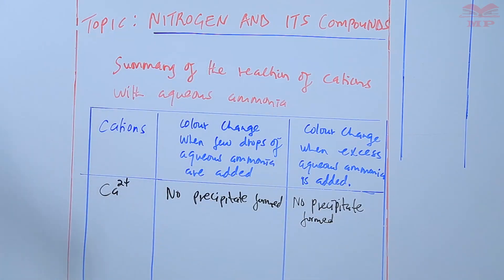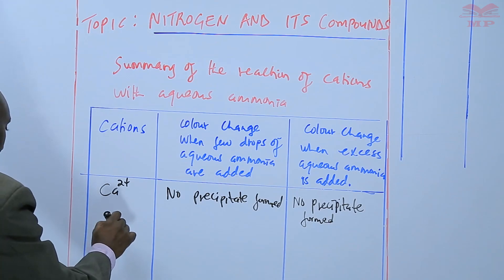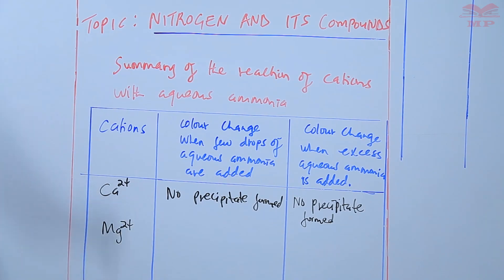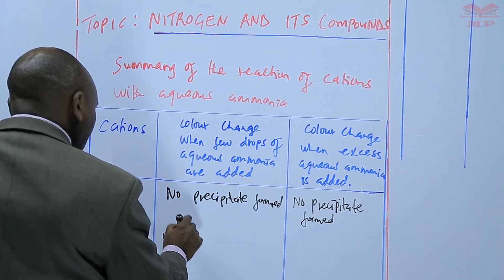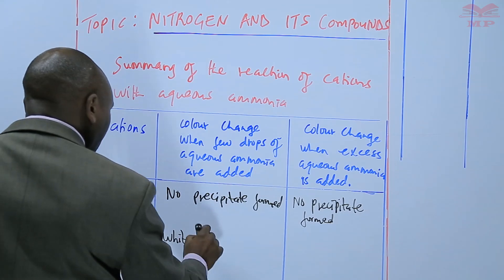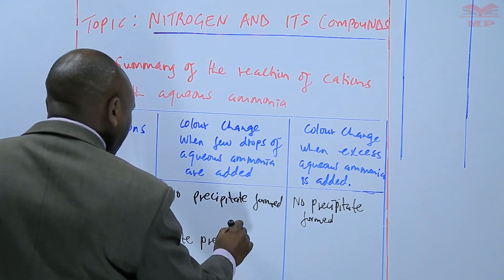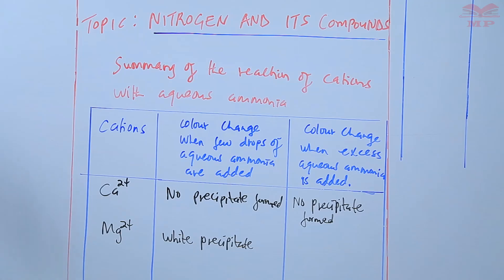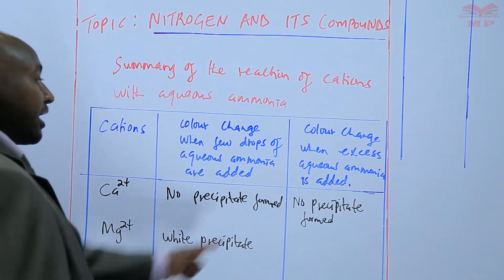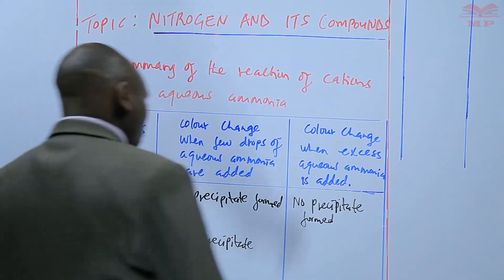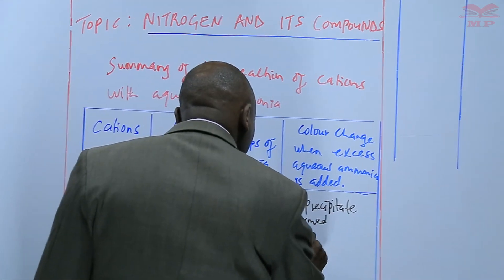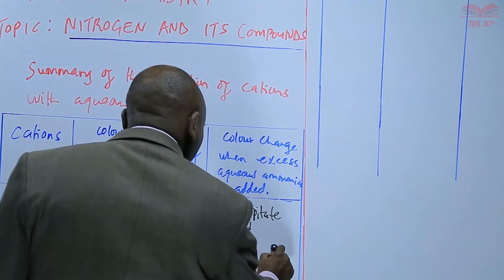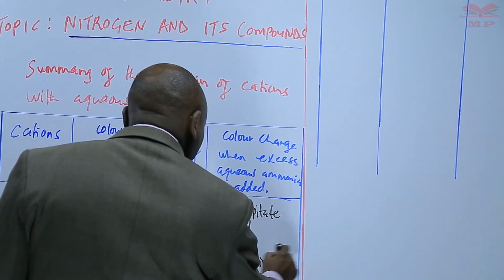If you have magnesium ions, they will form a white precipitate. And even on the addition of excess aqueous ammonia, the white precipitate remains.